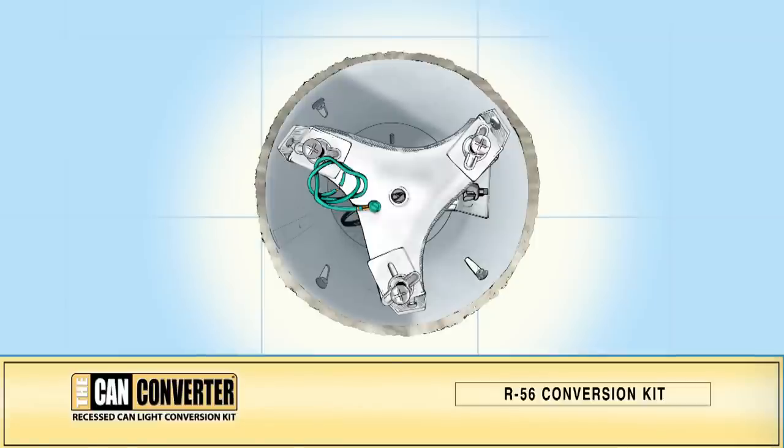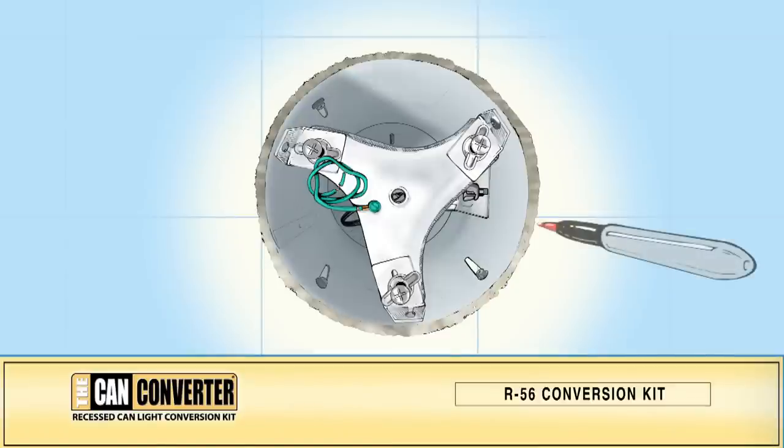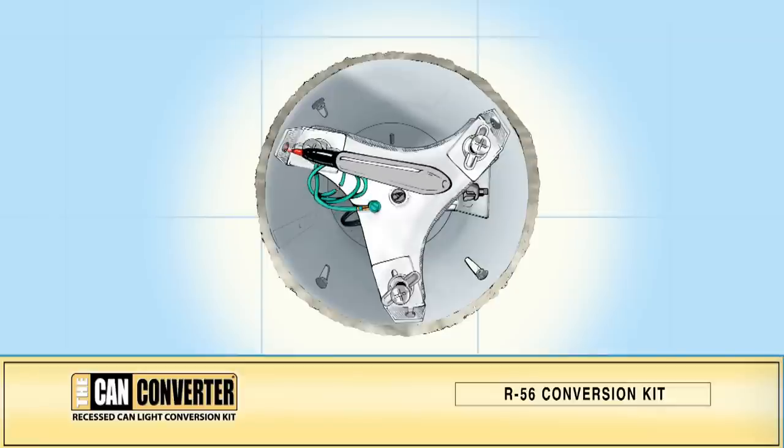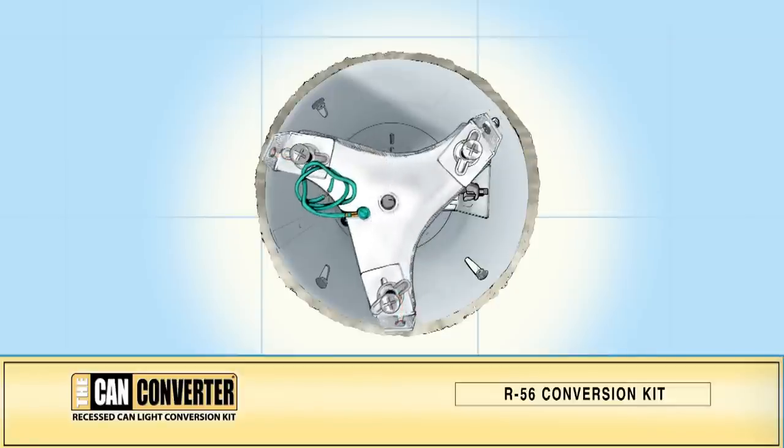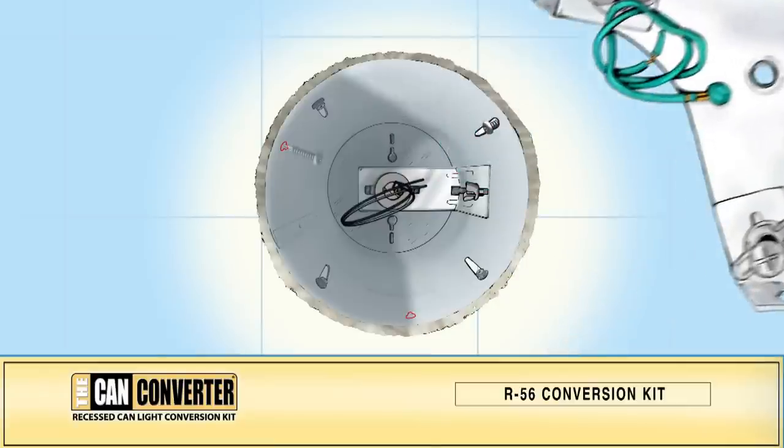Loosen the wing nuts and slide the offset sliding brackets so that they make contact with the inside wall of the CAN housing. Mark the lock positions of the other two offset bracket holes on the CAN housing. Loosen the self-tapping screw and remove the mounting bracket assembly.